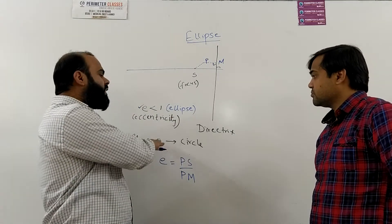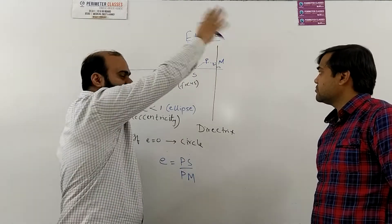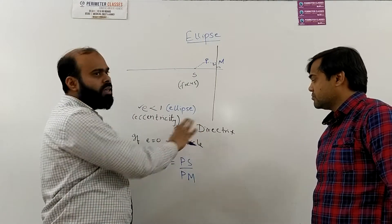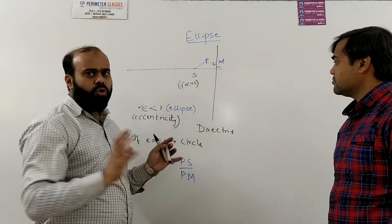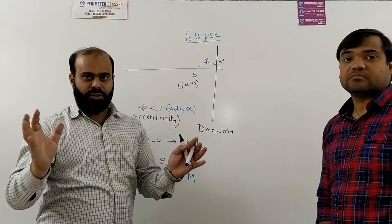In extreme cases it can become 0 when the directrix is at infinity, then it becomes a circle. So now from this concept we are going to start about ellipse.